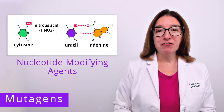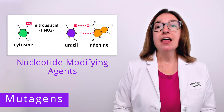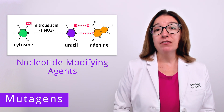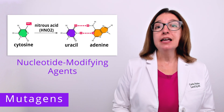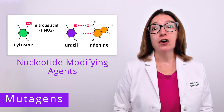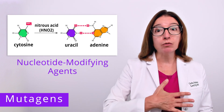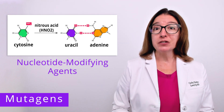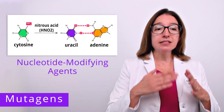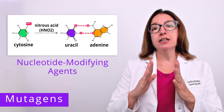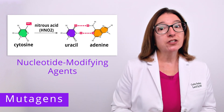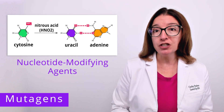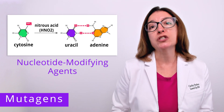Nucleotide modifying agents are chemicals that modify normal DNA bases. An example of a nucleotide modifying agent is nitrous acid, which causes deamination, or removal of the amino group, of the base cytosine. And as you can see in the image, this causes cytosine to be converted into uracil, which leads to changes in base pairing during DNA replication and causes point mutations.